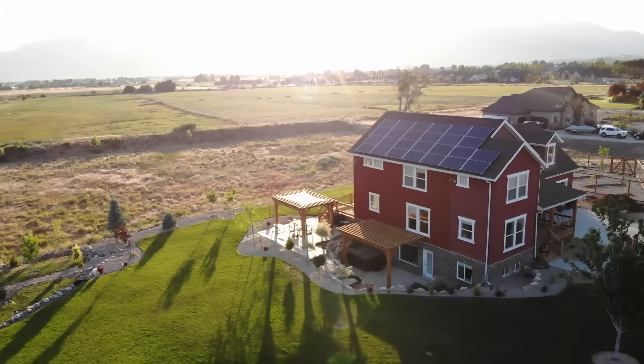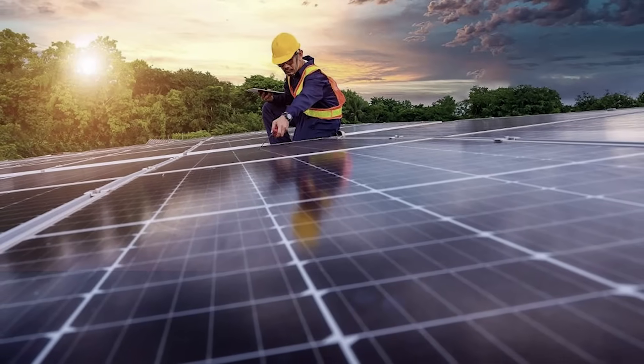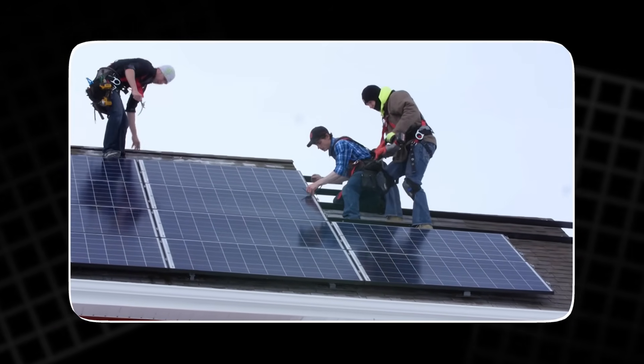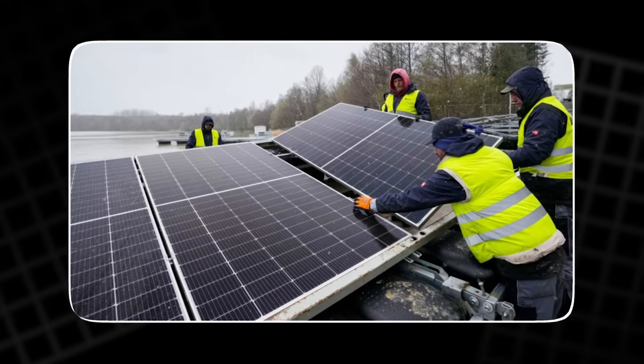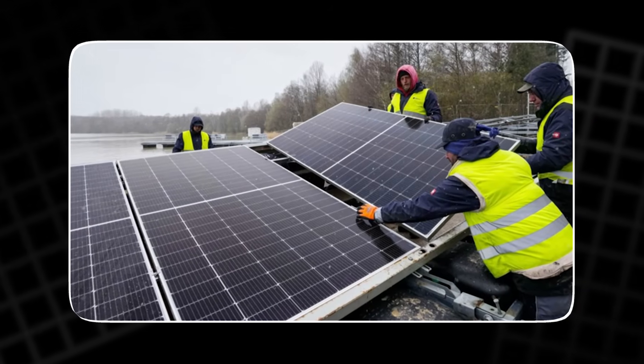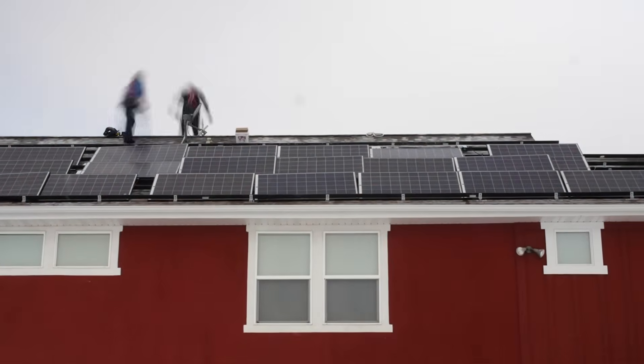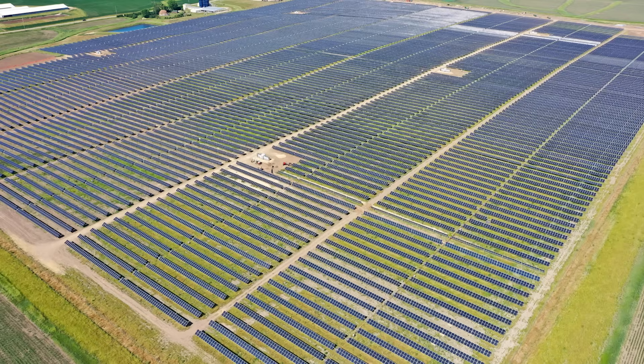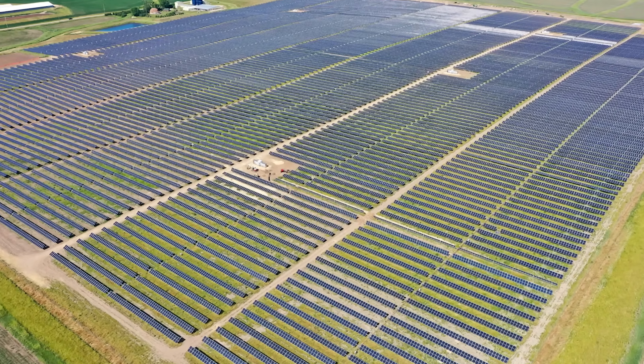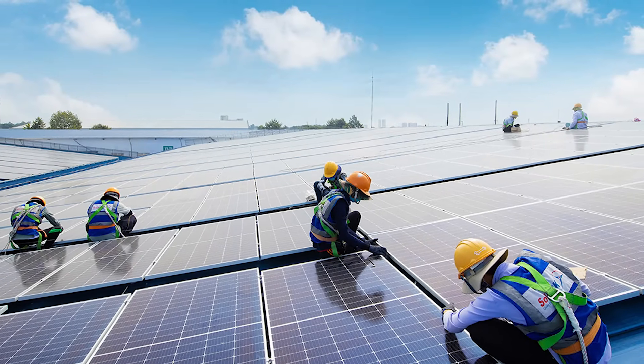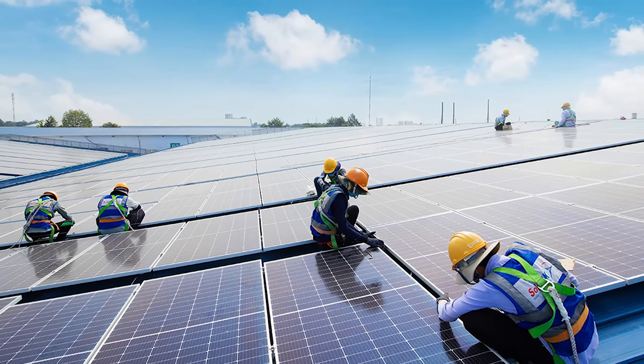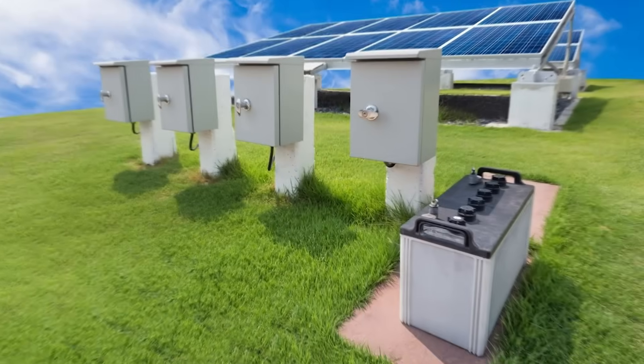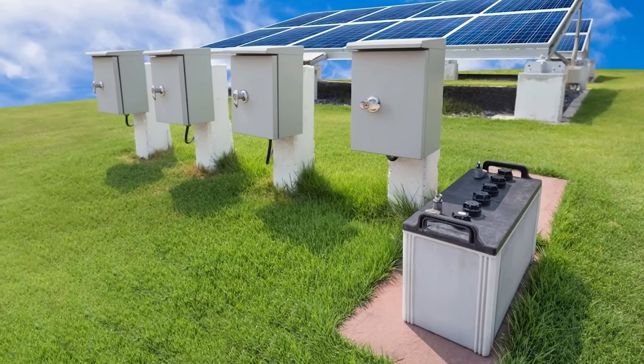If you need more current instead of more voltage, you connect multiple strings of panels in parallel. Doing this keeps the voltage the same, but adds the current from each string together. Scaling up from here is simple in theory, but tricky in practice. Multiple panels form a solar array. And these arrays can be connected further to build massive systems like those seen on solar farms.